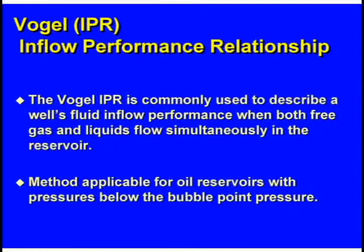The Vogel curve plots the producing bottom hole pressure divided by the static bottom hole pressure on one axis, and the producing rate as a percentage of the maximum rate on the other. If your producing bottom hole pressure equals your static pressure, you have zero flow rate coming into the well. When you make your producing bottom hole pressure zero — withdrawing everything, gas and liquid, as soon as it comes in — you have your maximum flow rate.